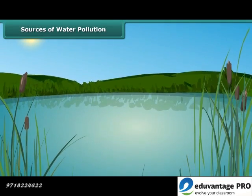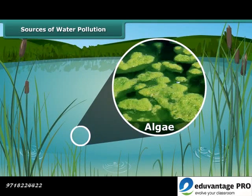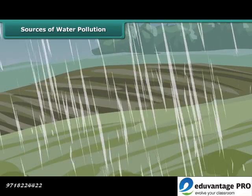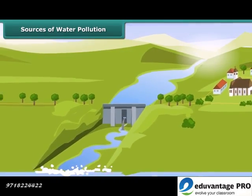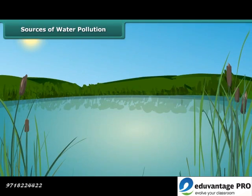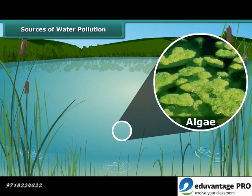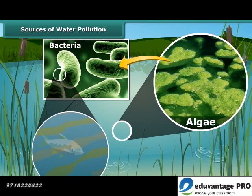Have you seen ponds which look green from a distance? This is due to algae grown in them. During rainfall, large amounts of fertilizers get washed from the fields and fall into ponds and rivers. These washed-off fertilizers act as nutrients for algae to flourish. When these algae die, they serve as food for decomposers like bacteria. Bacteria use up most of the oxygen in the water, and as a result, fish and other aquatic animals die due to lack of oxygen.